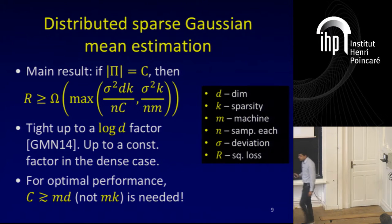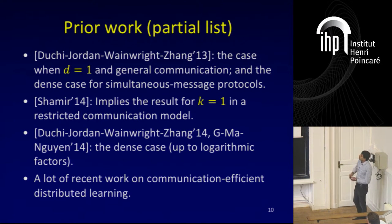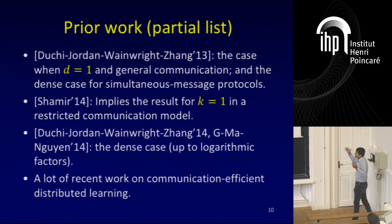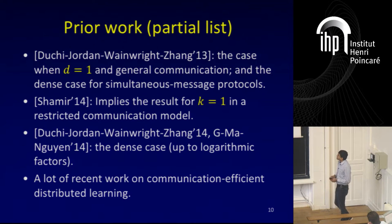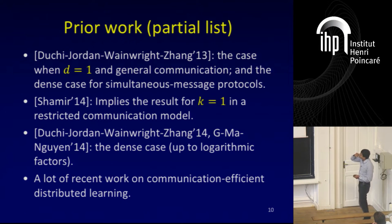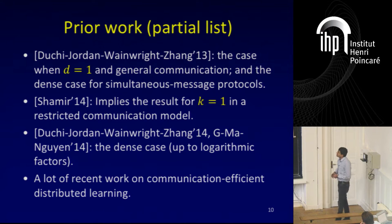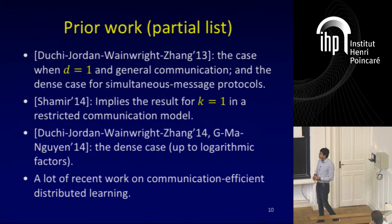Let me mention prior work. Duchi, Jordan, Wainwright and Zhang studied the case when the dimension is one and proved omega(m) lower bounds, which are optimal. In the dense higher-dimensional case, they only proved lower bounds for simultaneous protocols — a restricted communication model. Shamir in 2014 studied the case when sparsity is exactly one and proved lower bounds in restricted communication models. Duchi, Jordan, Wainwright and Zhang later handled the dense case for arbitrary protocols, also achieved in joint work with Ma and Nguyen. There has been a lot of recent work on communication-efficient distributed learning.